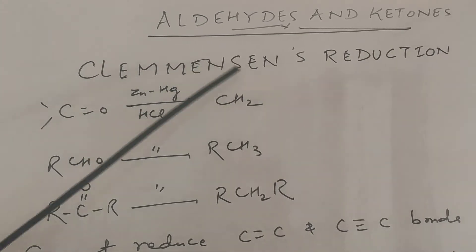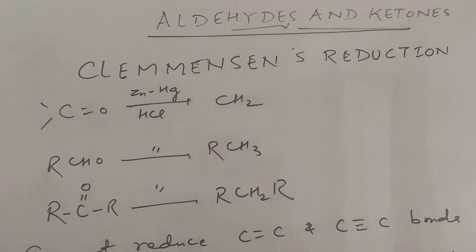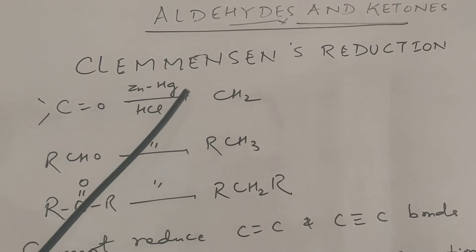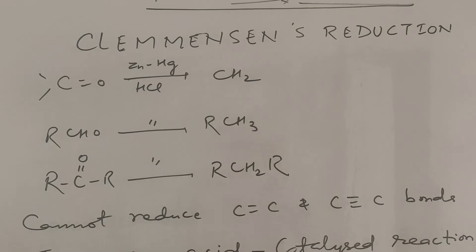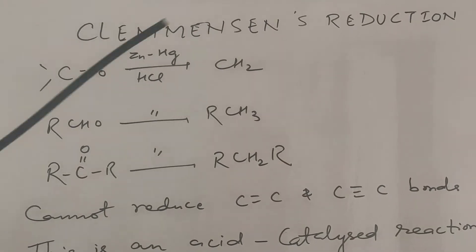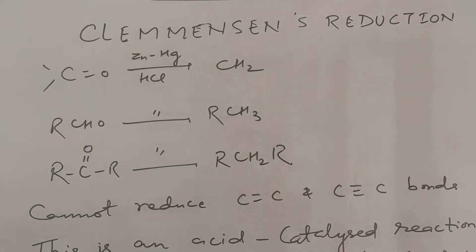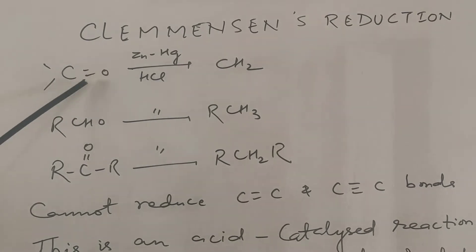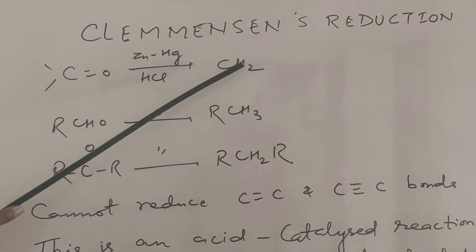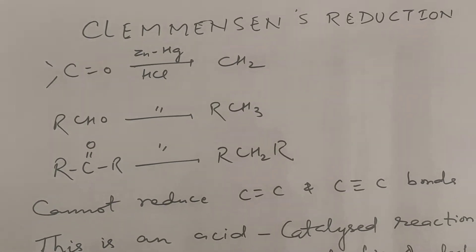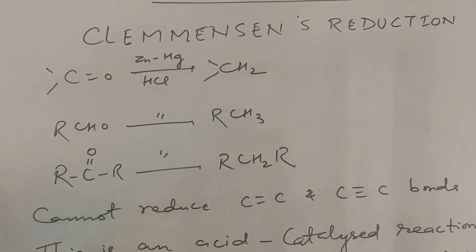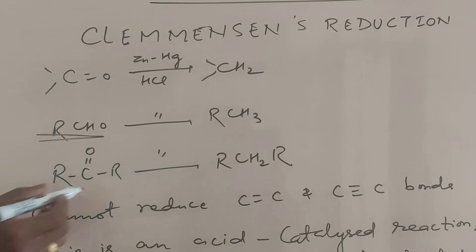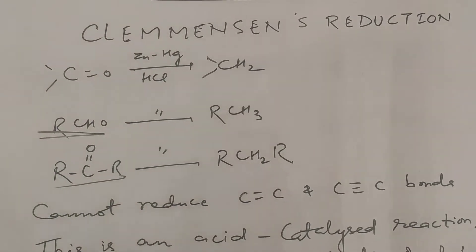We are going to start Clemmensen reduction. In this reaction, a carbonyl compound is reduced to alkanes. Clemmensen reduction reduces aldehydes and ketones to alkanes. The carbonyl group converts to CH2 — aldehyde gets converted to RCH3 and ketones get converted to RCH2R.